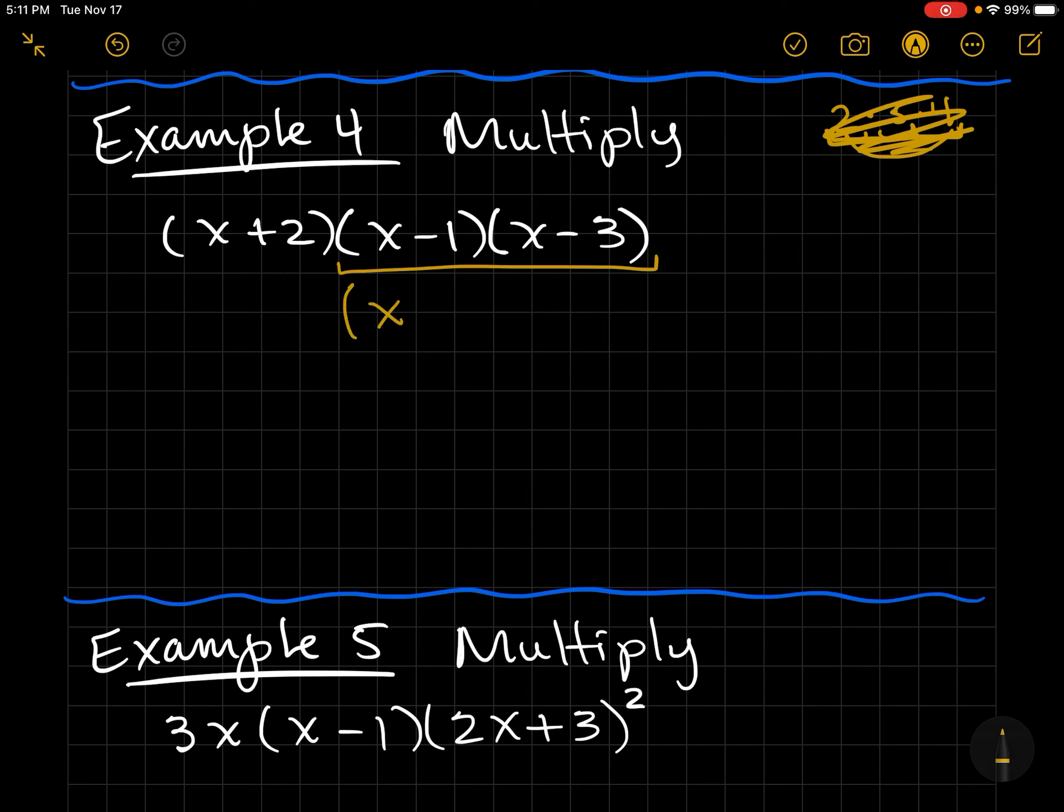So here I get first x². If I add outer and inner, that gives me negative 4x, and negative 1 times negative 3 is a positive 3. Outer and inner are generally like terms, so I like to put them together in my head.